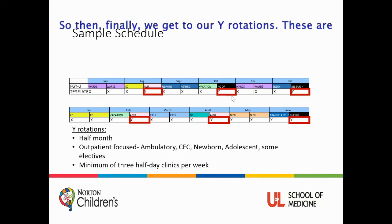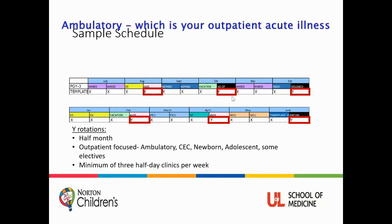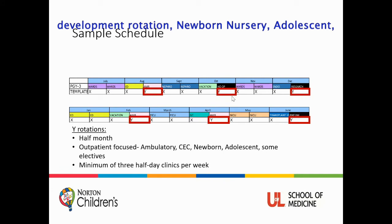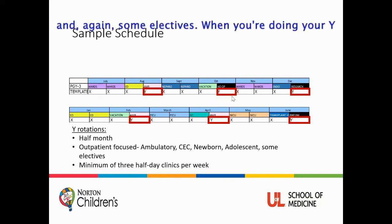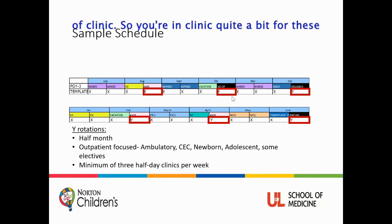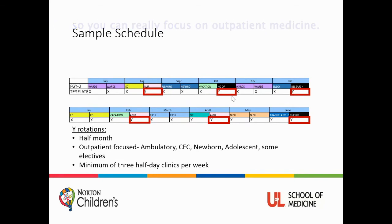Finally, we get to our Y rotations. These are half-month rotations that are typically outpatient-focused, such as ambulatory — which is your outpatient acute illness experience — CEC, which is our behavior and development rotation, newborn nursery, adolescent, and some electives. When you're doing your Y rotations, you'll do a minimum of three half-days per week of clinic. So you're in clinic quite a bit during these Y blocks, and you can really focus on outpatient medicine.